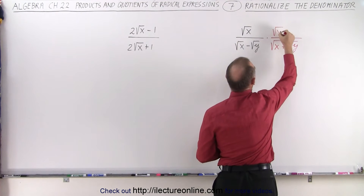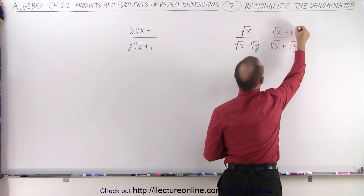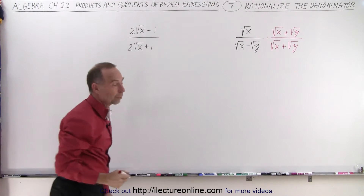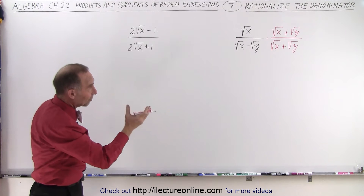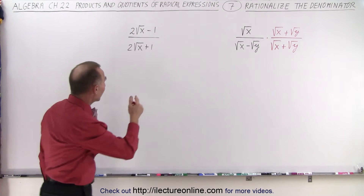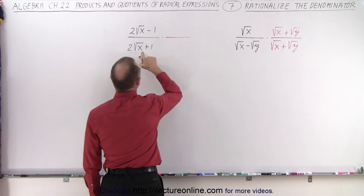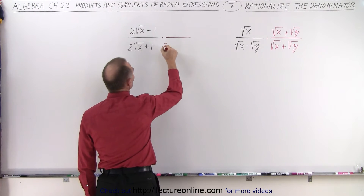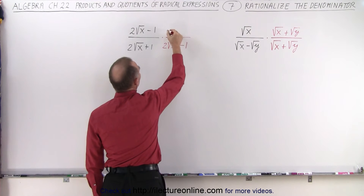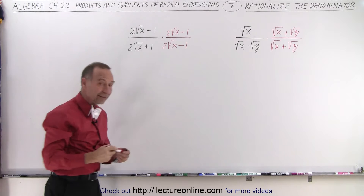We need to do exactly the same with the denominator as we do with the numerator. Recognize that we're simply multiplying the fraction by 1. Similarly, we're going to multiply both the numerator and denominator by the conjugate of the denominator, which is 2 times the square root of x minus 1, and 2 times the square root of x minus 1.